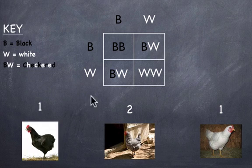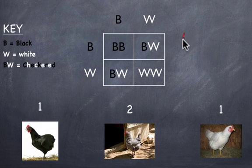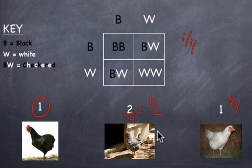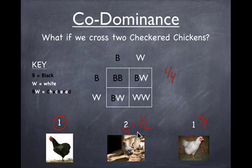From this one-to-two-to-one ratio, we can figure out all sorts of probabilities. For example, the probability of getting a black feathered chicken would be one out of four — you just take this number and divide it by the total possibilities, which is four. The probability of getting a checkered chicken would be one half — I just took two divided by four and reduced that down to one half. And then we have a 25% chance, or a one out of four probability, of getting a white feathered chicken. We can never get a true breeding checkered chicken, which is unfortunate. But if you ever want to guarantee yourself a checkered chicken, you cross a black chicken with a white chicken.